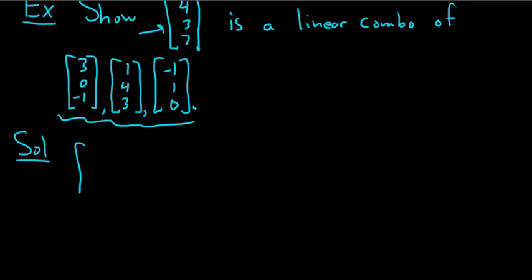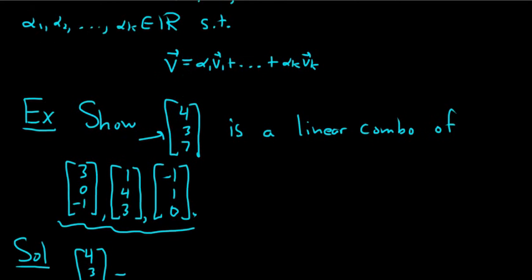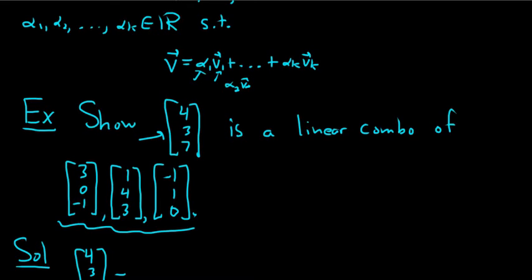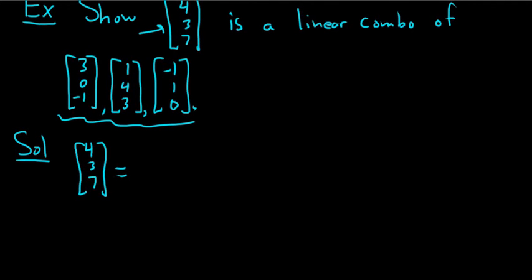We have 3, 0, negative 1, 1, 4, 3, and then we have negative 1, 1, 0. So to show that this vector here is a linear combination of these down here. So let's go ahead and do it very carefully. Solution. So let's show that 4, 3, 7.